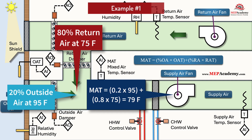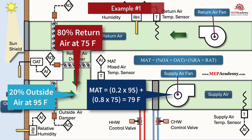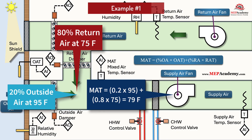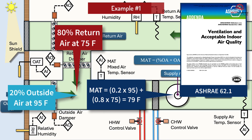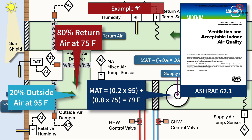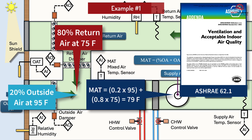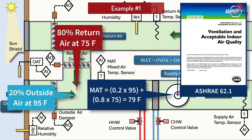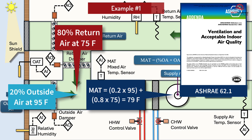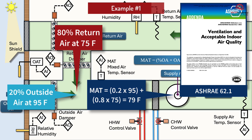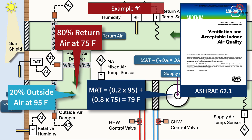In this case, since the outside air is way above the high limit for any economizer, the outside air would be set to the code minimum per ASHRAE 62.1. It makes no sense to waste energy cooling outdoor air at 95°F when the return air is at 75°F, not considering relative humidity.